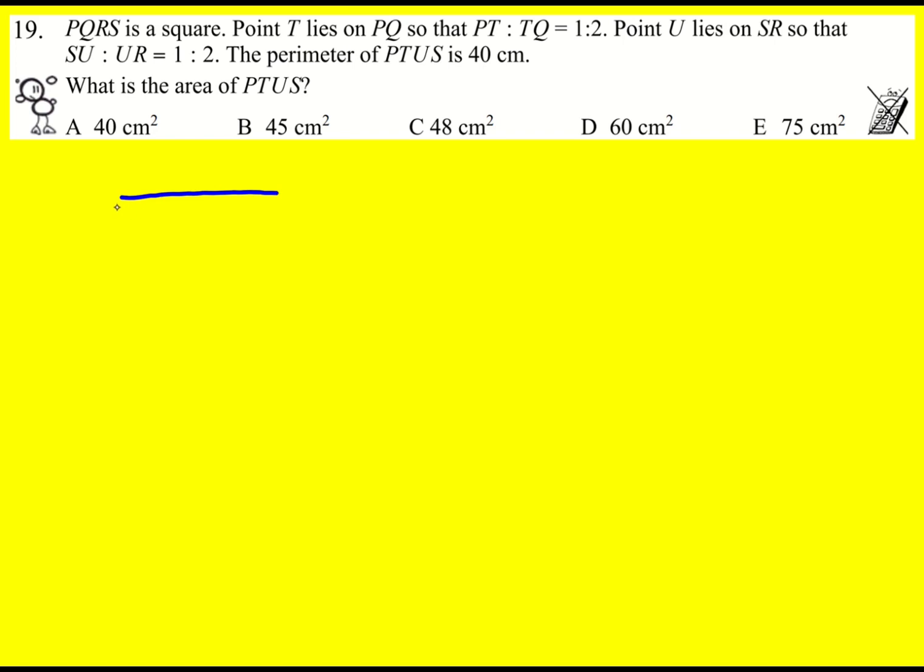Getting a good diagram down on this question is absolutely key. So we've got a square PQRS, and we're told there's a point T that lies on PQ so that PT to TQ is 1 to 2.